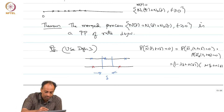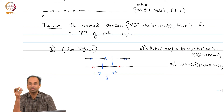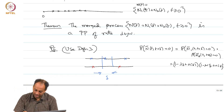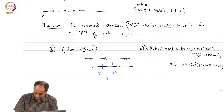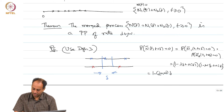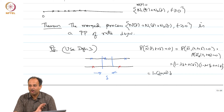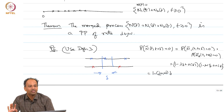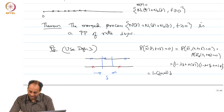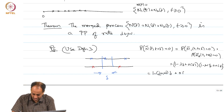Using Definition 3, if you write this out you get: 1 − (lambda + mu)·delta + lambda·mu·delta² + lambda·delta × o(delta) + mu·delta × o(delta) + o(delta) × o(delta). All of those higher-order terms can be absorbed into another little-o(delta) term, giving 1 − (lambda + mu)·delta + o(delta).